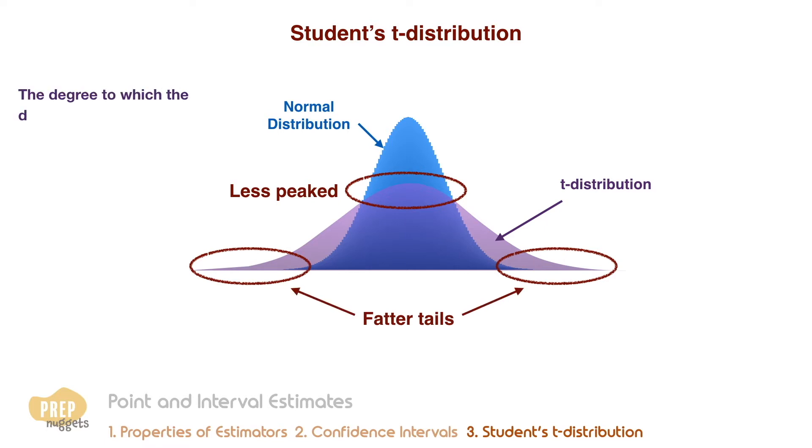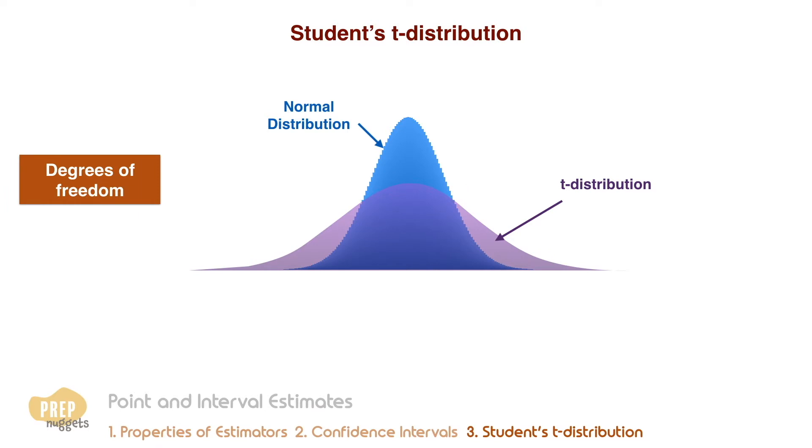The degree to which the distribution deviates from normal is defined by one single parameter – the degrees of freedom. The degrees of freedom for tests based on sample means are n-1. This is because, given the mean, only n-1 observations can be unique. The larger the degrees of freedom, the closer the T distribution approaches the normal distribution.